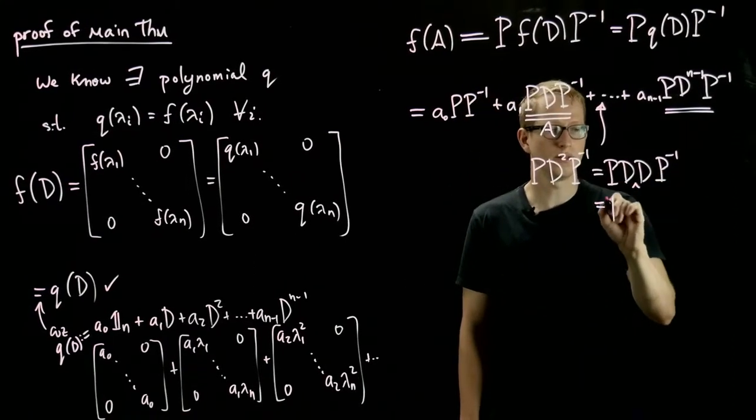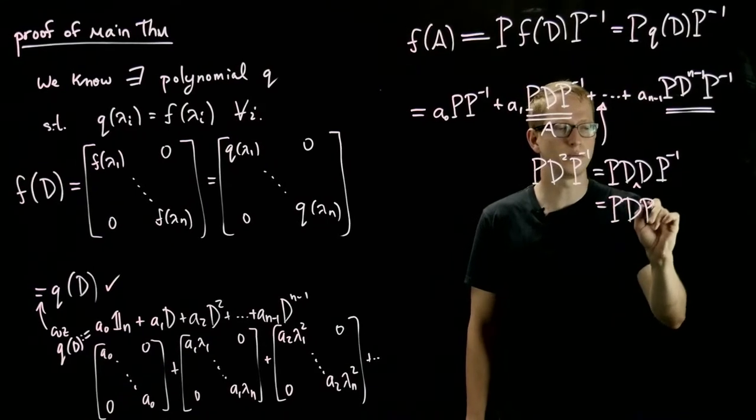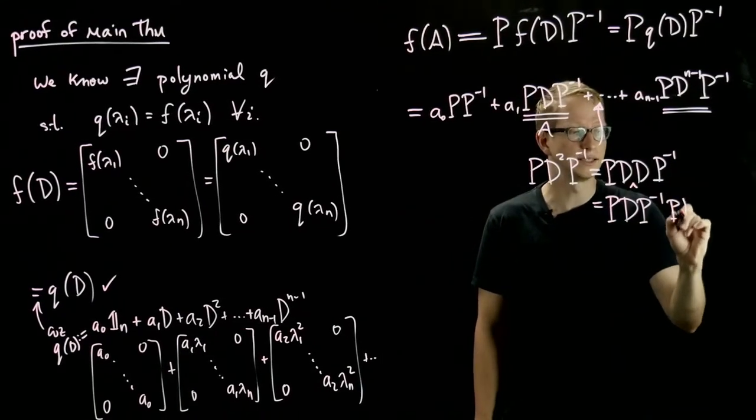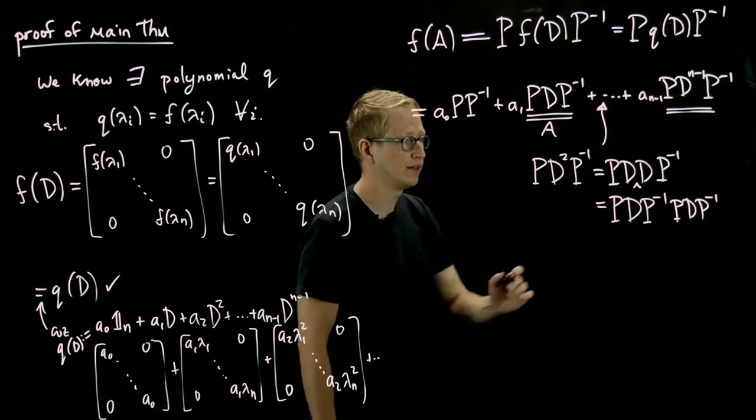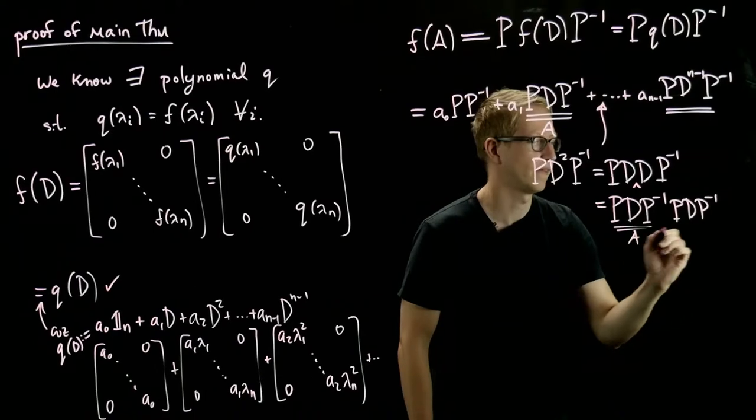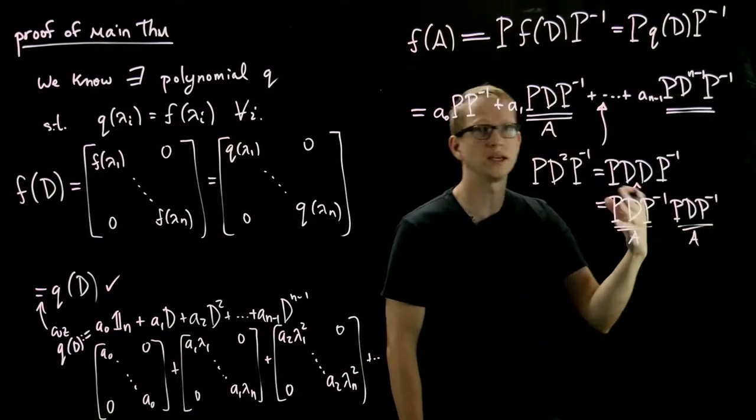And this gives us P D P inverse times P D P inverse again. And this is just A, and this is just A, so we get A squared.